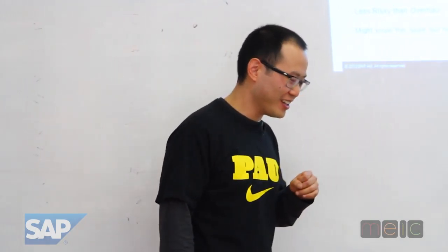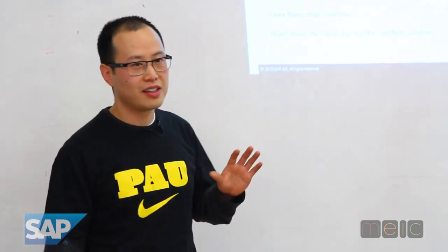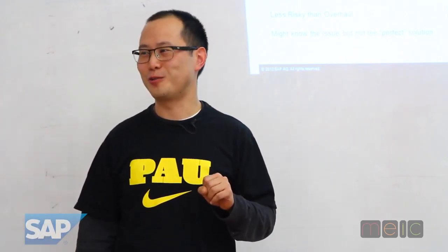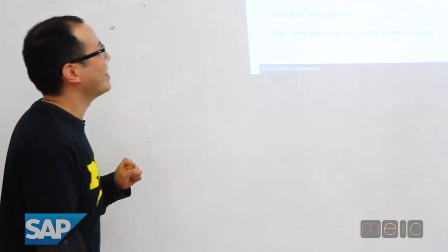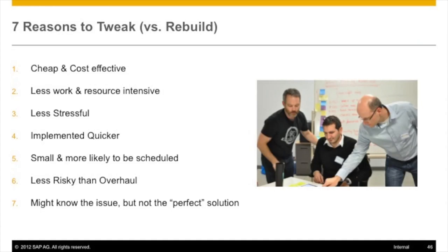They say perfection is the enemy of good — Voltaire said that. The idea is that unfortunately you're in a phase where perfection is not the priority. What you want to do is what the technical term calls a 'tweak.' There are seven very good reasons to do tweaks versus a rebuild, redesign, or something like that.